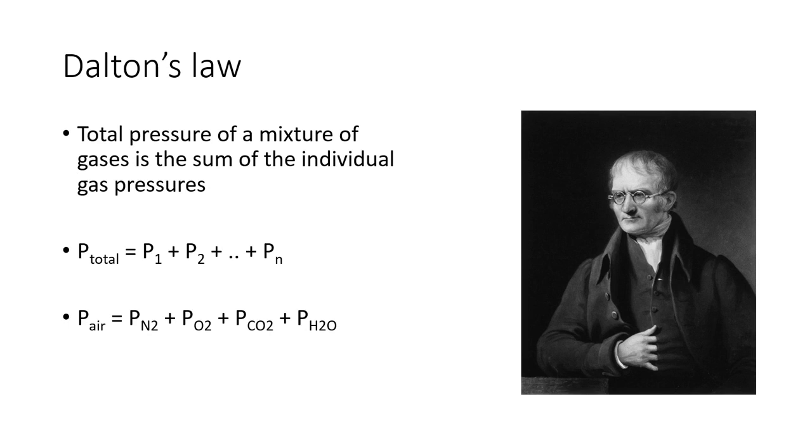Dalton's Law just simply states the total pressure of a mixture of gases is the sum of the individual gas pressures. So for example, in the atmosphere, there is nitrogen, oxygen, carbon dioxide, argon, water, and a few other things. Well, the total pressure of the atmosphere is the sum of the individual pressures. So atmospheric pressure equals the pressure of nitrogen plus the pressure of oxygen plus the pressure of CO2 plus the pressure of water and anything else.